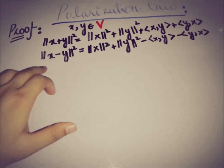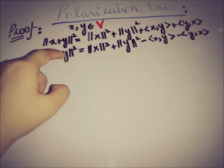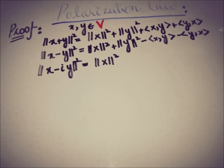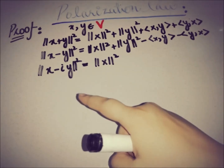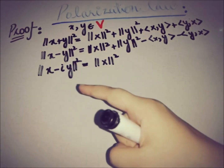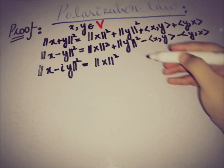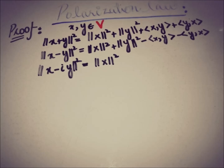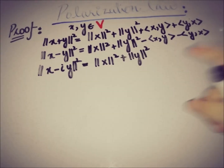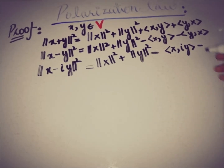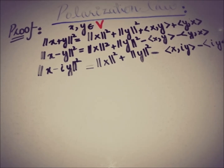Now if we replace y with iota y, the expansion gives: norm of x squared plus norm of y squared — because iota squared equals minus one, and the norm has no effect on this — and this term will have iota y in the second position of the inner product.